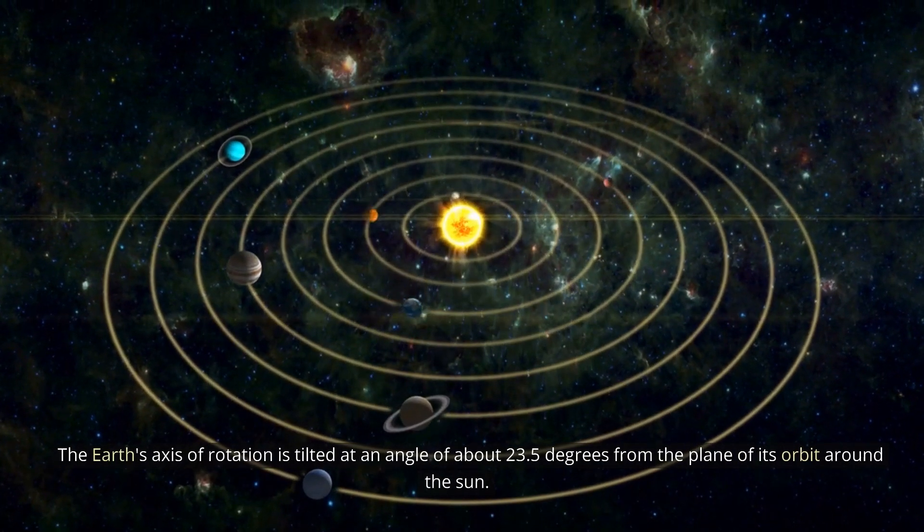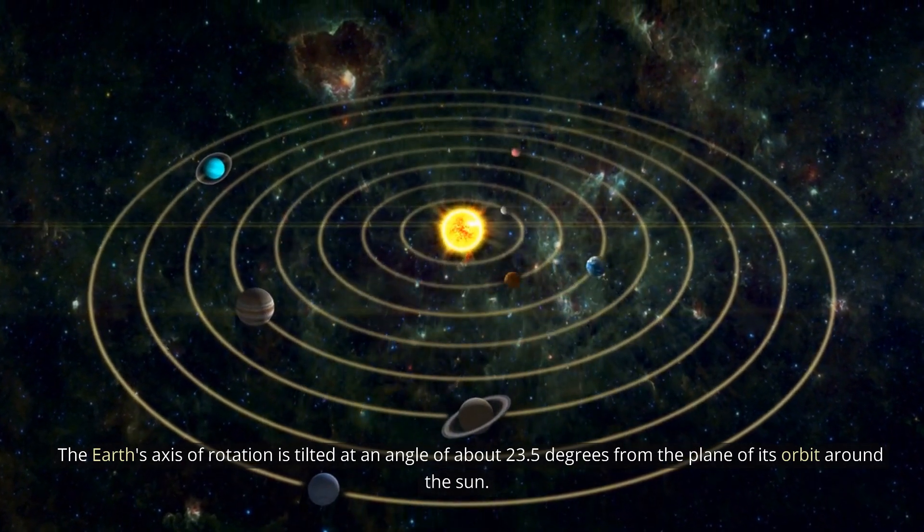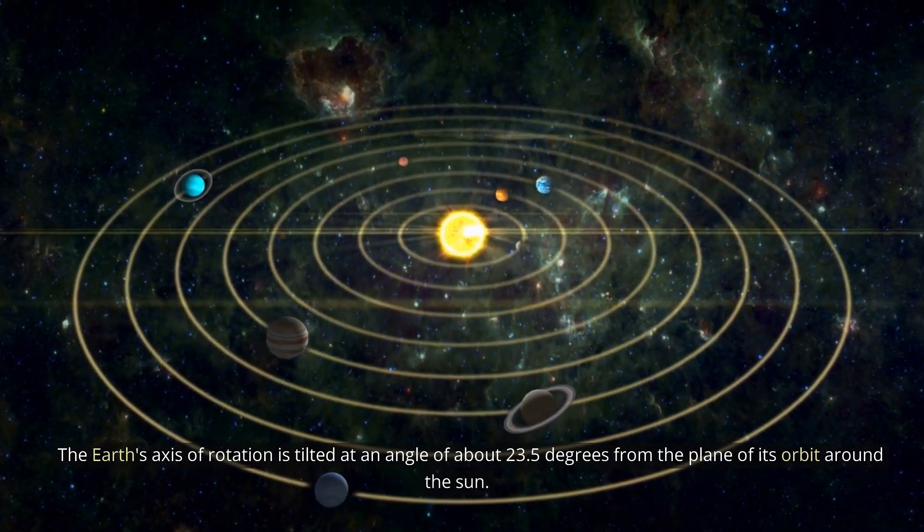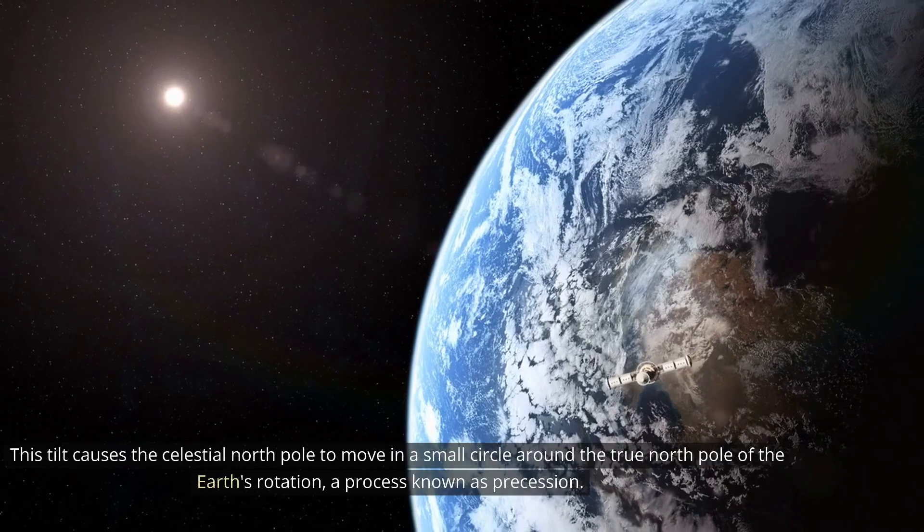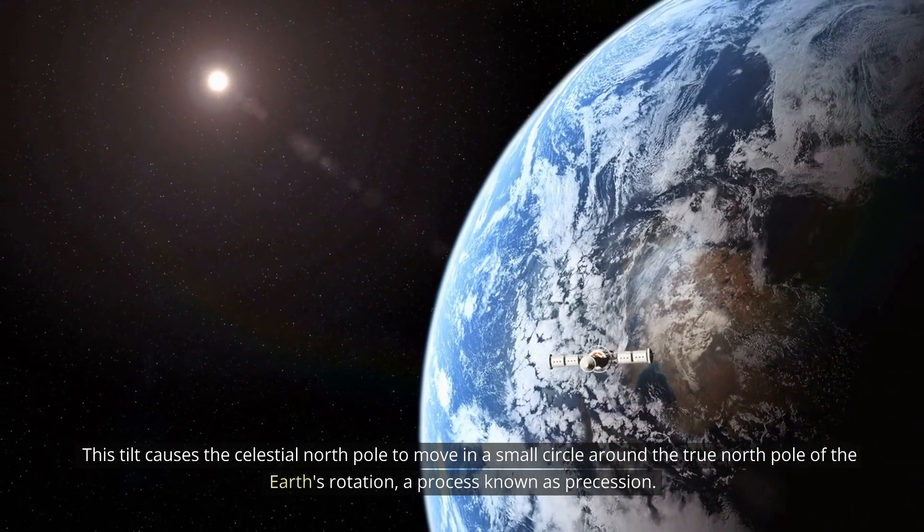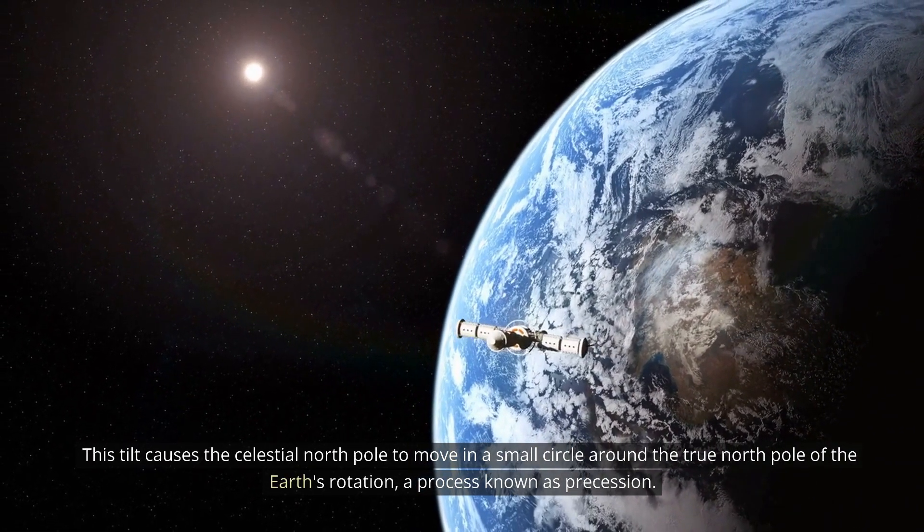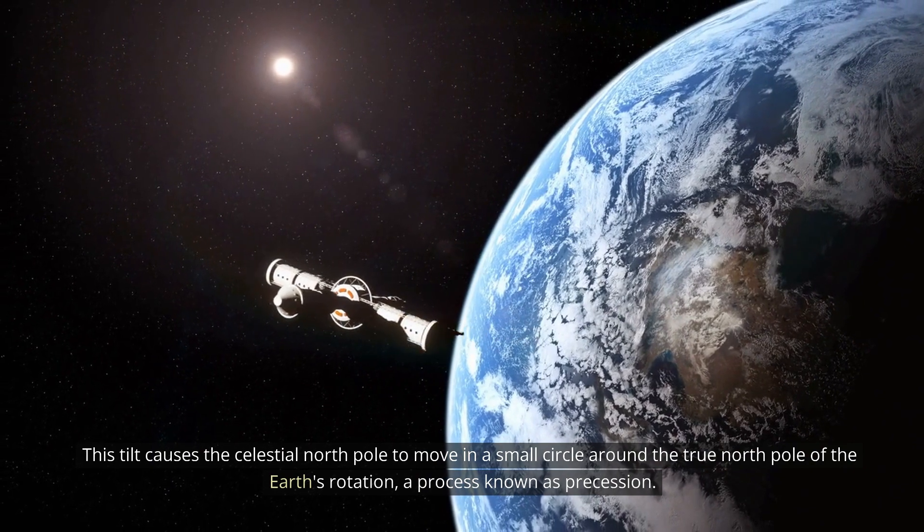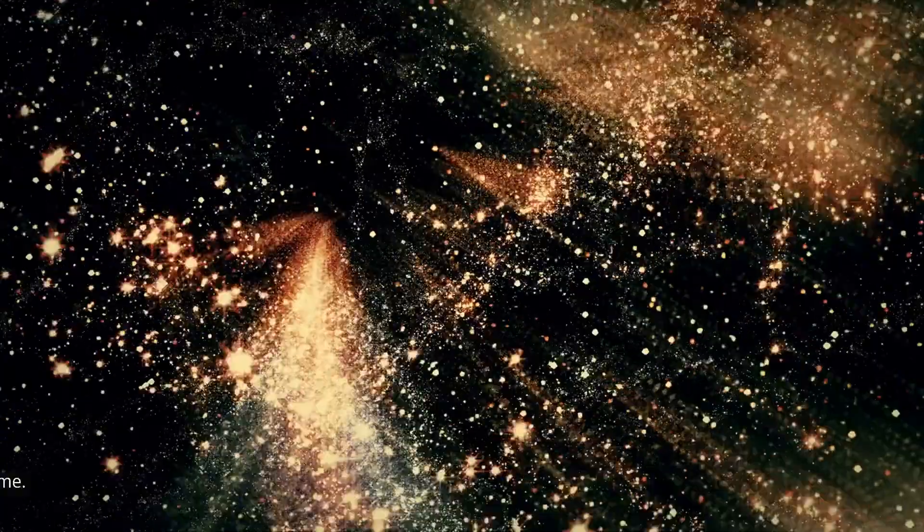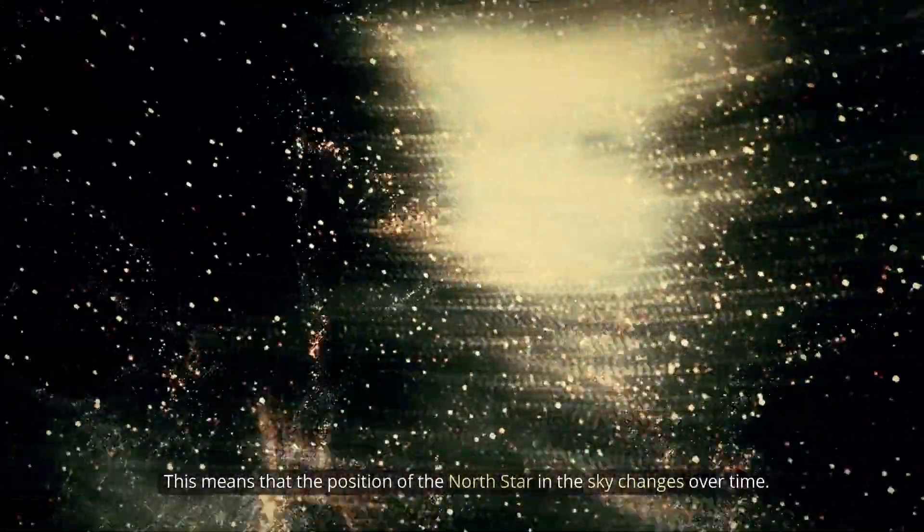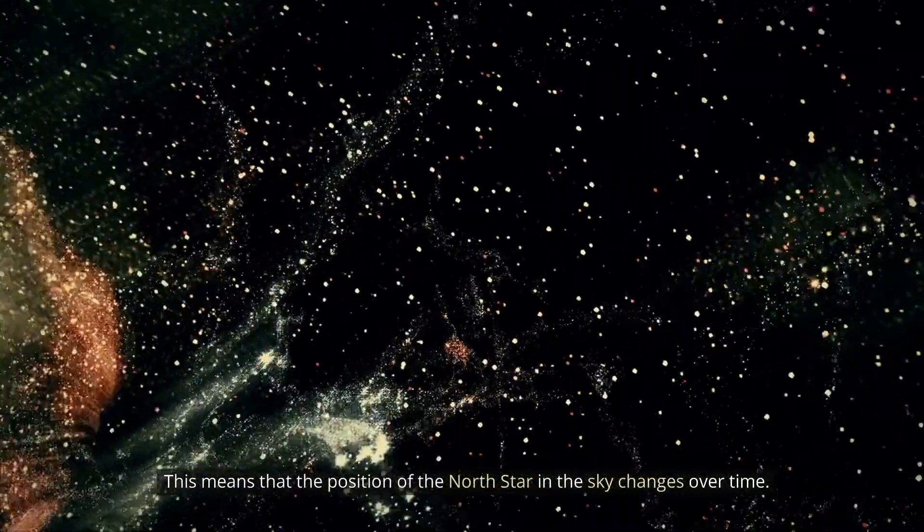The Earth's axis of rotation is tilted at an angle of about 23.5 degrees from the plane of its orbit around the Sun. This tilt causes the celestial North Pole to move in a small circle around the true North Pole of the Earth's rotation, a process known as precession. This means that the position of the North Star in the sky changes over time.